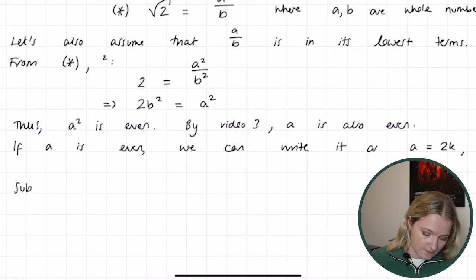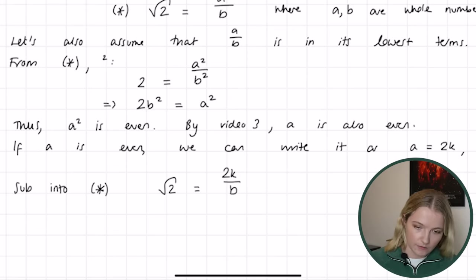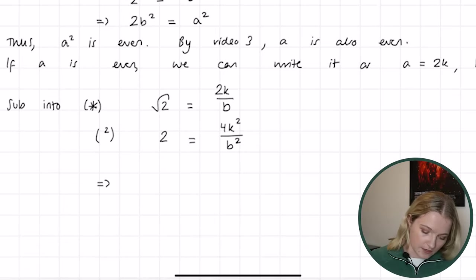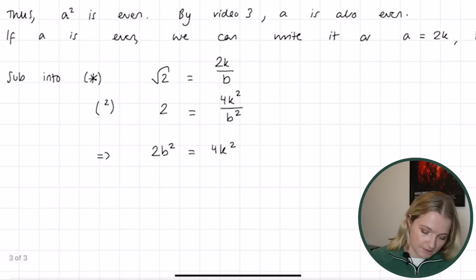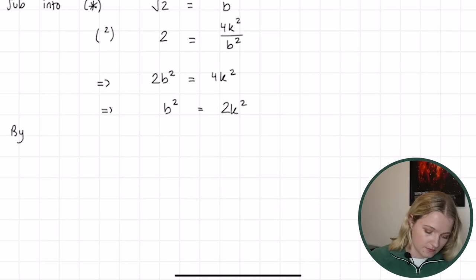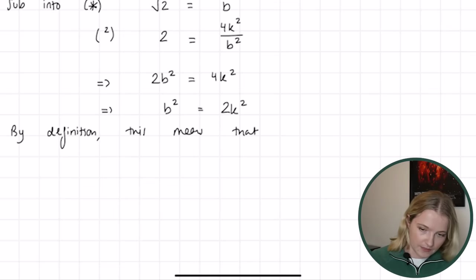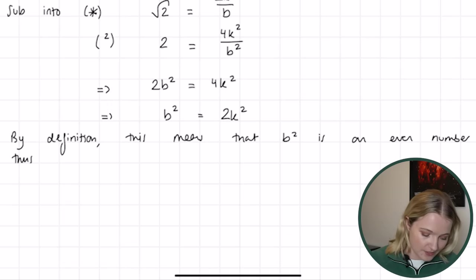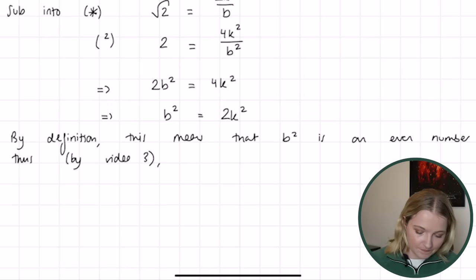Given this new expression for a, let's substitute back into star. We have: root 2 equals 2k over b. Squaring both sides: 2 equals 4k squared over b squared, which implies 2b squared equals 4k squared, which implies b squared equals 2k squared. By definition, this means b squared is an even number.